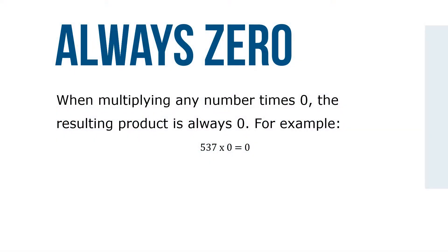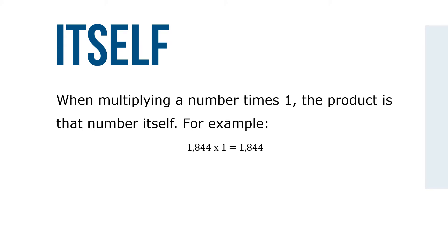When multiplying any number times 0, the resulting product will always be 0. For example, 537 times 0 is 0. When multiplying a number times 1, the product is that number itself. For example, 1,844 times 1 is 1,844.